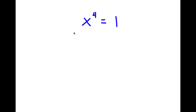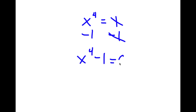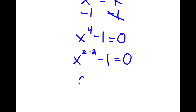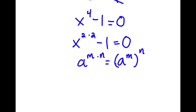So in this problem, I have x to the power of 4 is equal to 1. I'm going to first start by subtracting 1 on both sides, so these two cancel out, and I get x to the power of 4 minus 1 is equal to 0. Now x to the power of 4, I can rewrite this as x to the power of 2 times 2. Using the rule a to the power of m times n equals a to the power of m to the power of n, I can rewrite this as x squared to the power of 2.